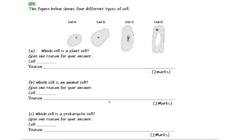The figure below shows four different types of cell. Which cell is a plant cell? Give one reason for your answer. For the next part, you have to decide which one is an animal cell and give a reason. Part C: you have to decide which one is a prokaryotic cell and give a reason for your answer.